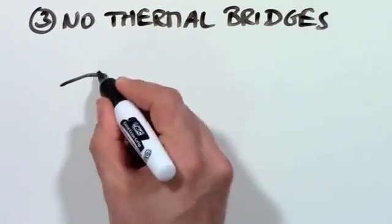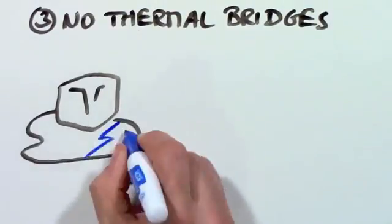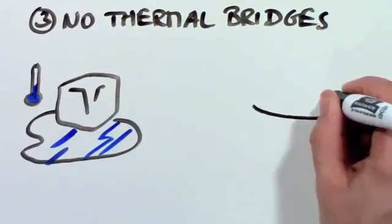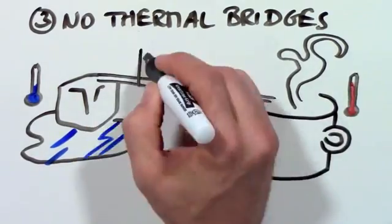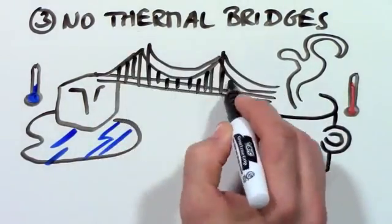3. No thermal bridges. A thermal bridge is like a road for heating energy in which warmth can travel right through your walls. As a matter of fact, most of our houses have thermal highways in our walls where heat can easily travel to the outside.